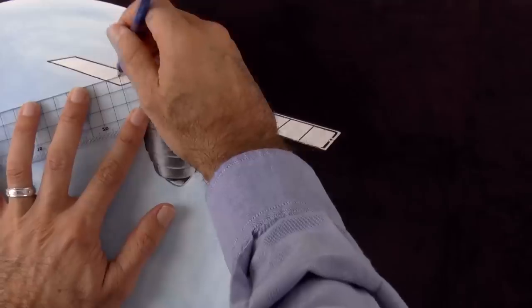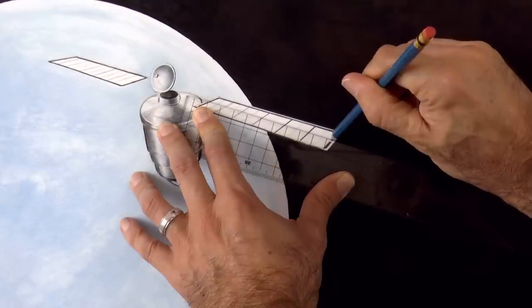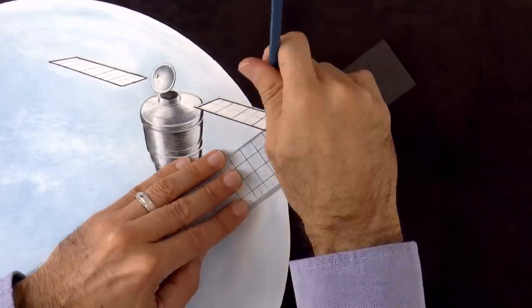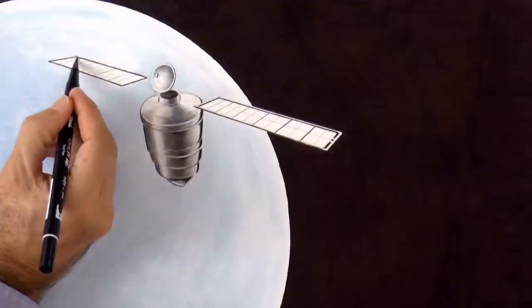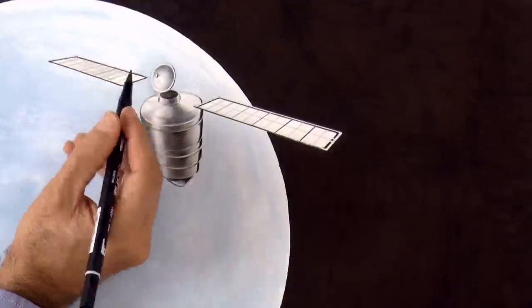All right! I use a ruler to straighten some of my lines that were all wavy. And with a gray marker we give a tone to the panels.